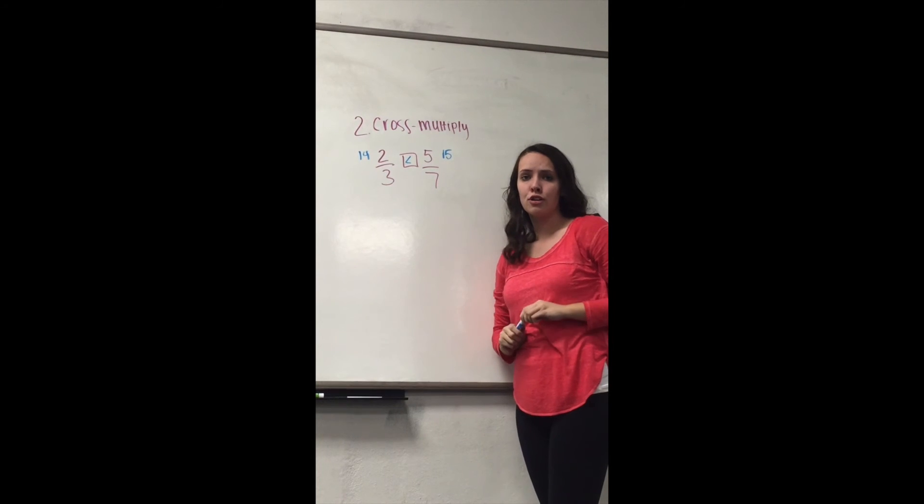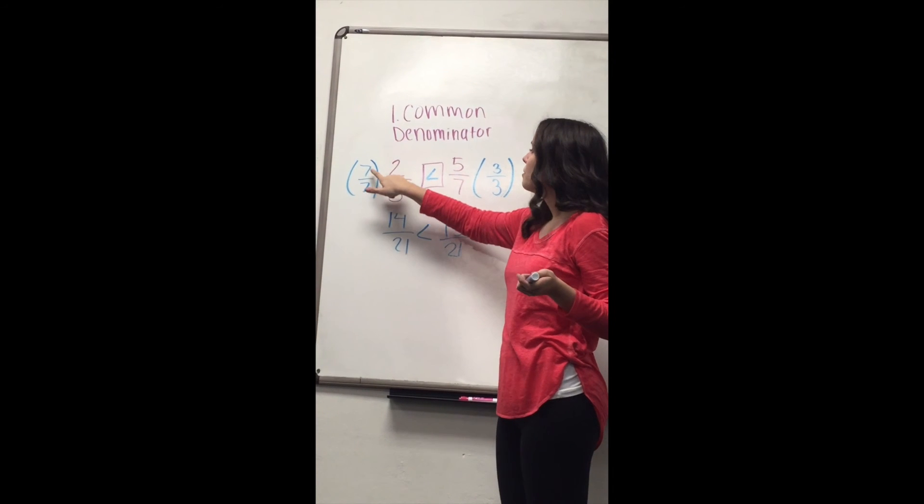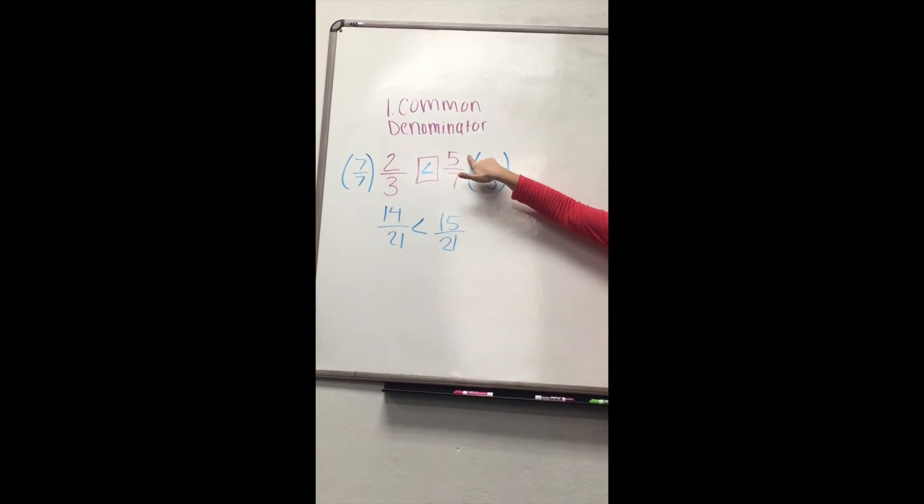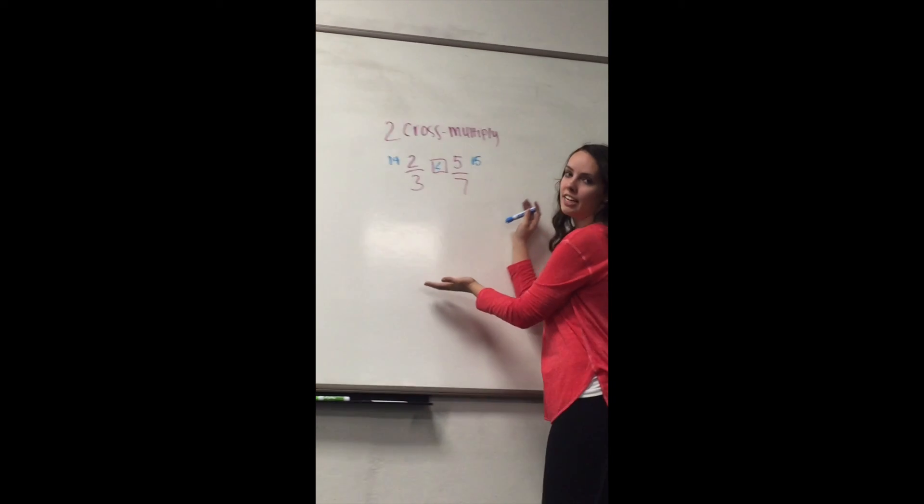And the reason that you can use the cross multiply method is because if you look over here, that's exactly what we did. We multiplied 7 times 2 and got 14. And then we multiplied 3 times 5 and got 15. And then we just compared 14 to 15. And that's exactly what we did over here.